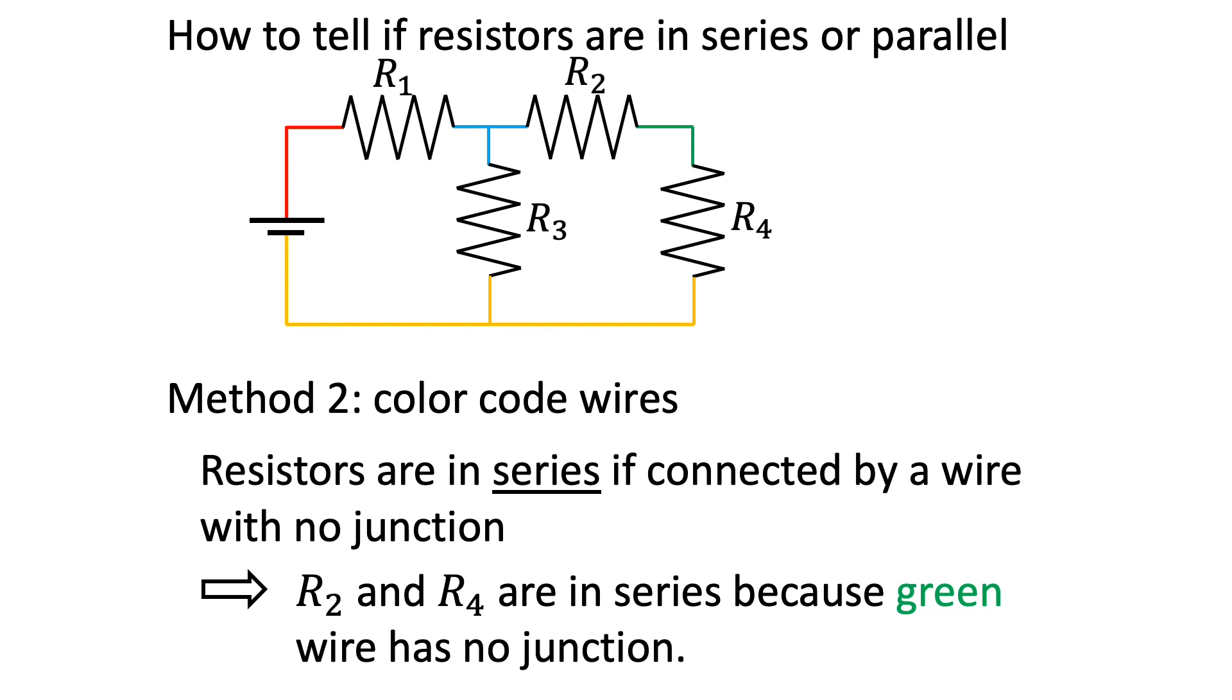And we can replace them with an equivalent resistor, which we call R24, whose resistance is just R2 plus R4.